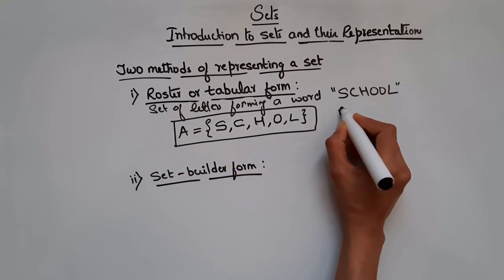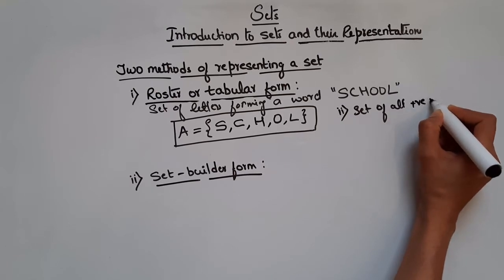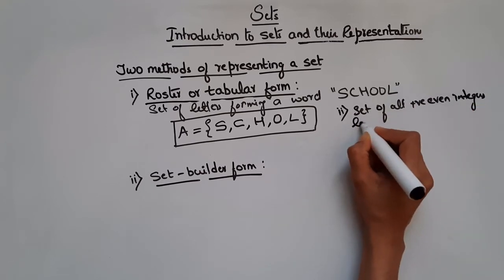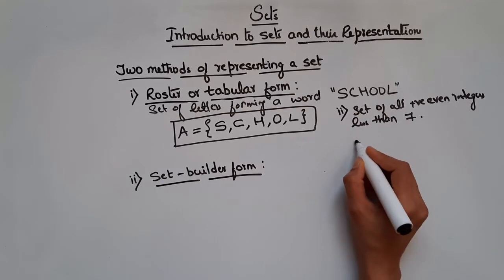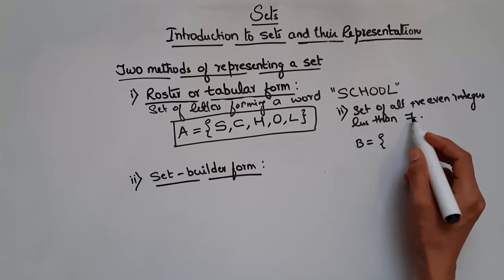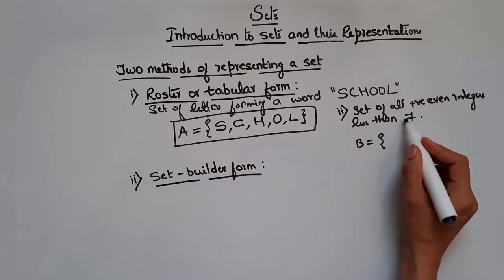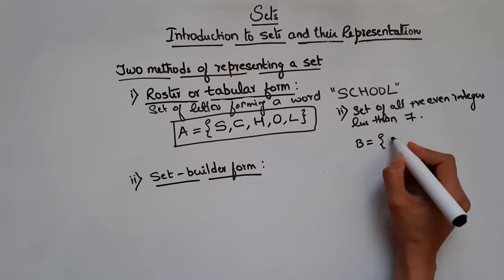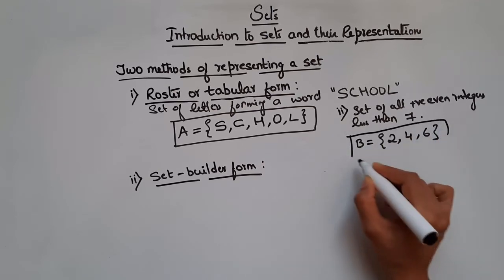Another example: set of all positive even integers less than 7. In roster form, positive integers up to 6 are 1, 2, 3, 4, 5, 6, but we want only even integers, so we have 2, 4, and 6. Therefore B = {2, 4, 6}. This is how you write a set in roster or tabular form.